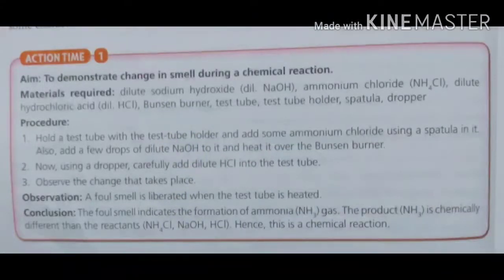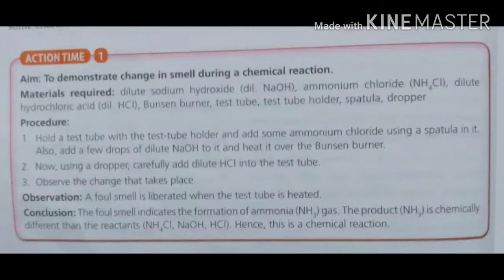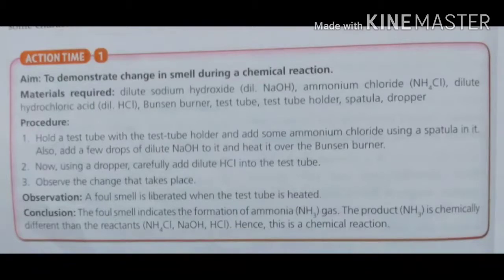The aim of our first experiment is to demonstrate change in smell during a chemical reaction. Materials required: dilute sodium hydroxide, ammonium chloride, dilute hydrochloric acid, Bunsen burner, test tube holder, spatula, and a dropper. Procedure: hold a test tube with a test tube holder, add some ammonium chloride using a spatula, add a few drops of dilute sodium hydroxide, heat it over the Bunsen burner, then add dilute hydrochloric acid using a dropper and observe the changes.